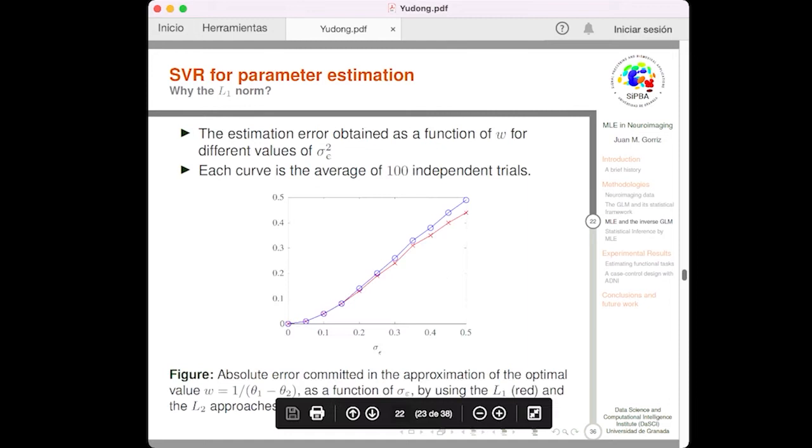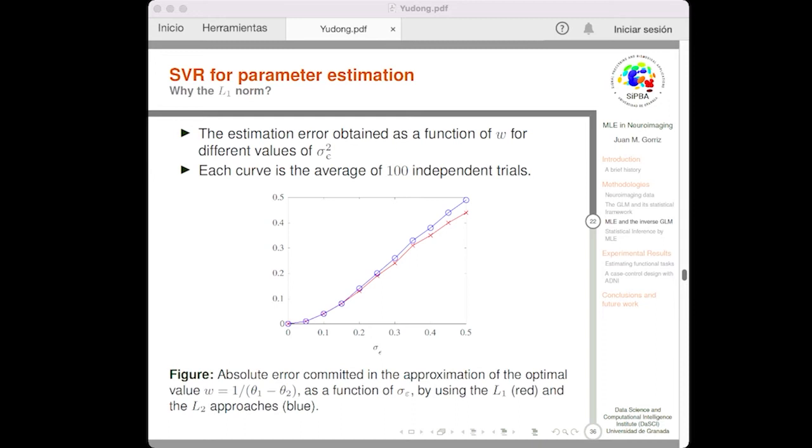Well, it's time to run some experiments to experimentally evaluate the performance of the above mentioned norms. In this figure, we represent the estimation error obtained by using both criteria, as a function of omega, and for different values of the standard deviation of the noise. Each curve is the average of 100 independent experiments, and it can be seen that both criteria are equivalent for low noise levels in the bottom part of the figure. However, the L1 norm-based approach is more robust when the noise increases. We see that the red curve is below the blue curve.